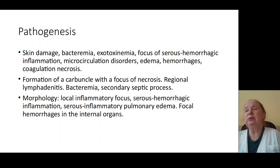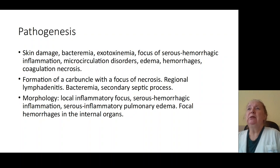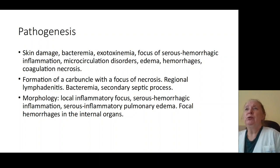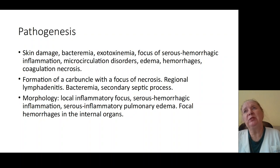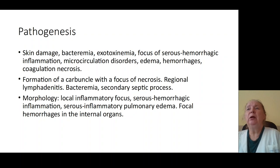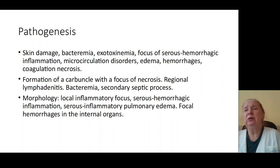This is characterized by polyorgan insufficiency: cardiovascular insufficiency, respiratory insufficiency, renal insufficiency, activation of coagulation, disseminated hemorrhagic syndrome, and formation of microthrombosis of blood vessels. Bacteria cause depression of immune response and depression of phagocytosis, leading to prolonged bacteremia, exotoxinemia, endotoxinemia, and formation of general forms of infection.